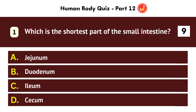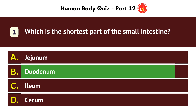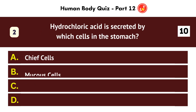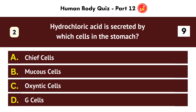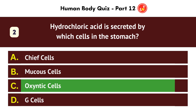Which is the shortest part of the small intestine? Duodenum. Hydrochloric acid is secreted by which cells in the stomach? Oxyntic cells.